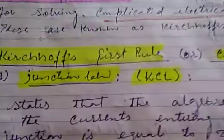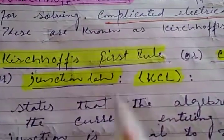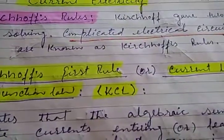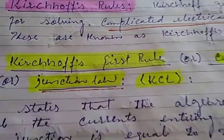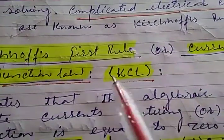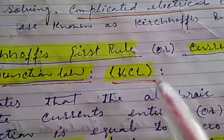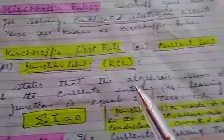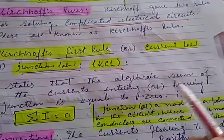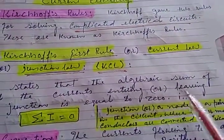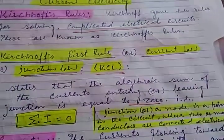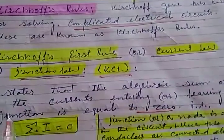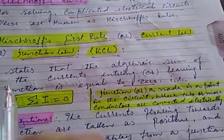Here we will study Kirchhoff's first rule, also called the current law or the junction law — Kirchhoff's Current Law, KCL. It states that the algebraic sum of all the currents entering or leaving the junction is equal to zero.